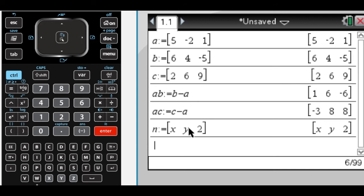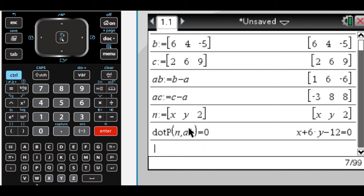What I want to do is I want N to be orthogonal to AB and to AC, so what I really want is for the dot product of N and AB to equal 0. And I want the dot product of N and AC to equal 0.